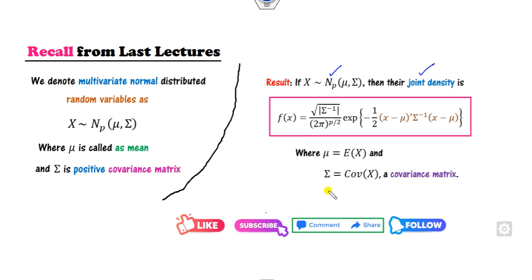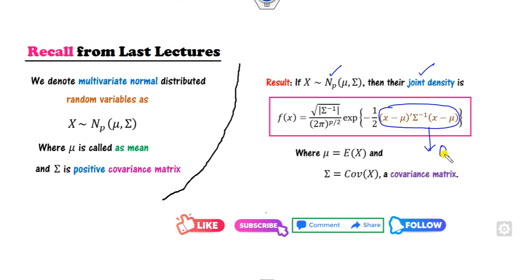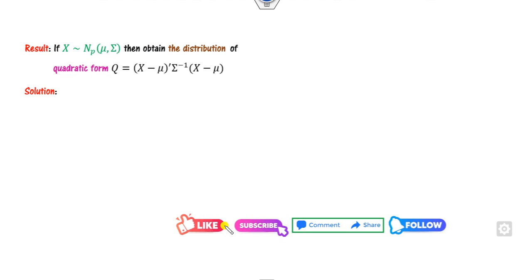Now, what is the objective of today's lecture? The objective is to find what the distribution of the quadratic form term Q is — specifically, if I call this term Q, what is the distribution of Q? That is the objective of today's lecture. Before I start directly on Q, please subscribe to my YouTube channel and like my video to get notifications in advance.